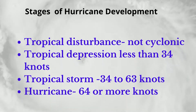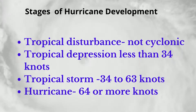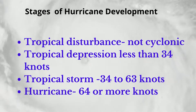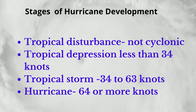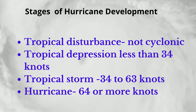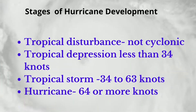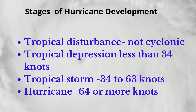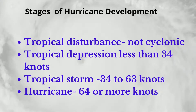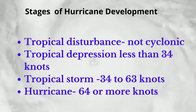A tropical storm is a counterclockwise circulation of clouds with maximum sustained surface winds of 34 to 63 knots or 39 to 74 miles per hour. And finally, if the tropical storm develops further, a hurricane will be formed.